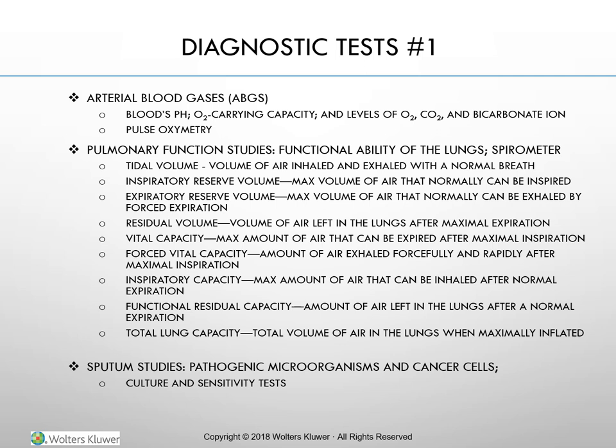Normal ABG values: arterial blood pH 7.35–7.45 (mixed venous 7.32–7.42); PaO2 80–100 mmHg (mixed venous 38–52 mmHg); PaCO2 35–45 mmHg (mixed venous 24–48 mmHg); bicarbonate (HCO3-) 22–26 mEq/L (mixed venous 19–25 mEq/L); SaO2 greater than 94% (mixed venous 65–75%).